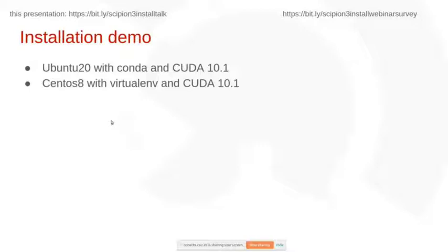Now I'm going to jump into the two demos. First, I'll demo the installation on Ubuntu 20 with conda. I prepared a virtual machine — basically the one you download from the Ubuntu website for Ubuntu 20, not the server configuration but a basic desktop installation. I already installed CUDA and conda so I'm not going to show those steps.